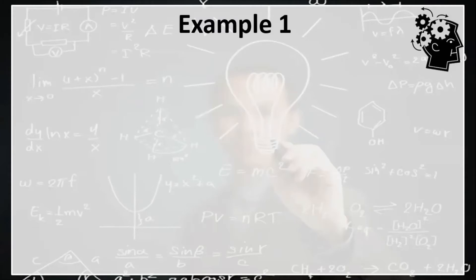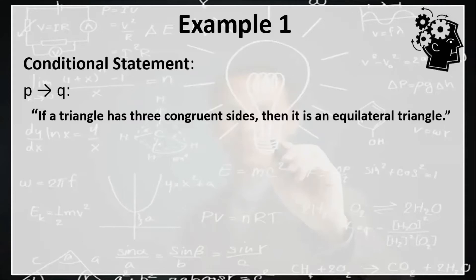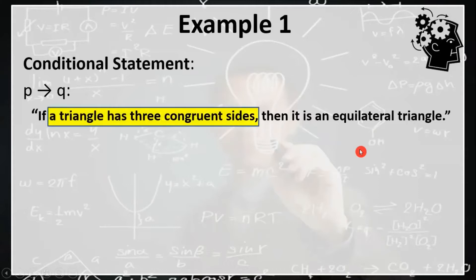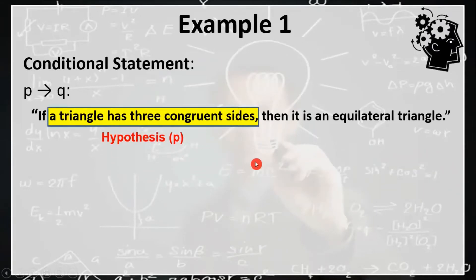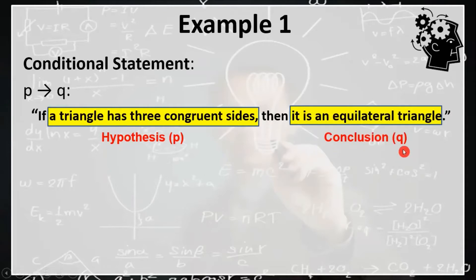Let's try our first example. Consider the conditional statement which is represented by P implies Q: if a triangle has three congruent sides, then it is an equilateral triangle. So based from this statement, our hypothesis is 'a triangle has three congruent sides,' which is represented by the variable P. Our conclusion is 'it is an equilateral triangle,' which is represented by Q.